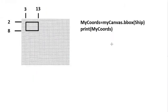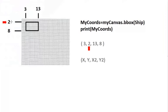So my coordinates in this case would equal my canvas — whatever the canvas is called — dot B-Box, and I've got a ship there. To print those coordinates I would get 3, 2, 13, 8. We can see it's the X and the Y, the X2 and the Y2.